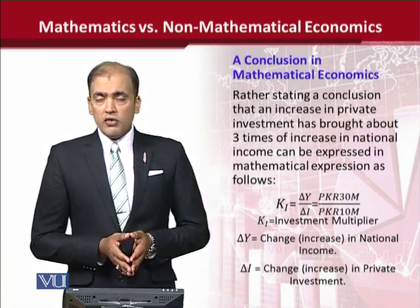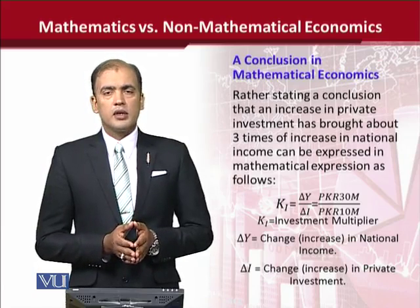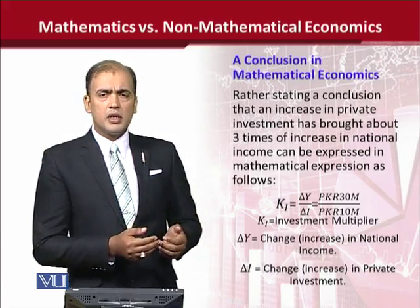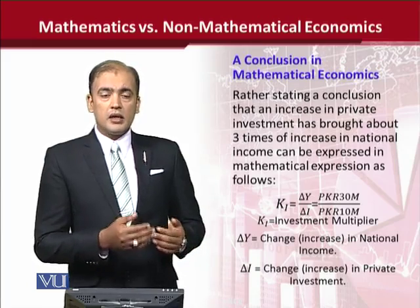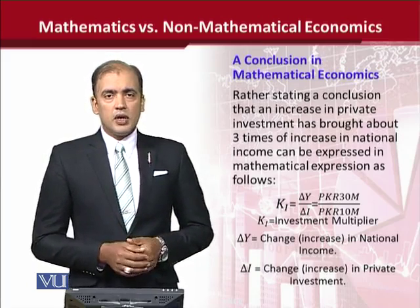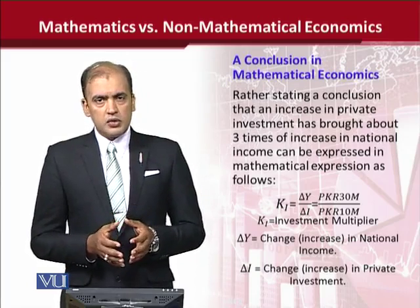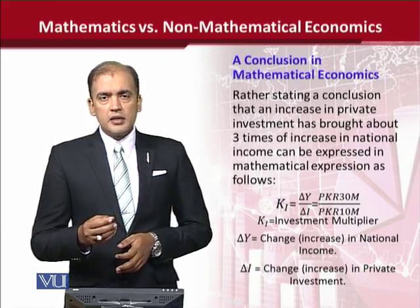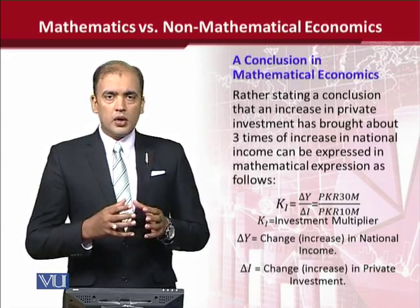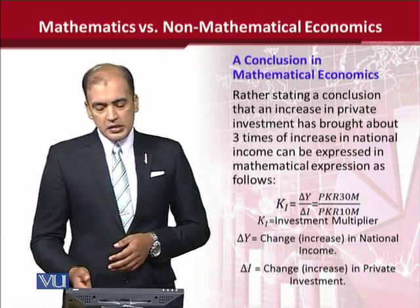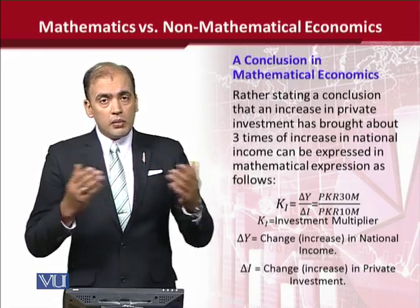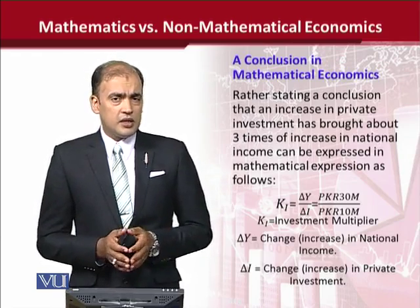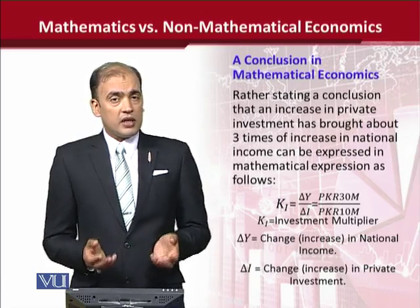We can also write the conclusions of economics in a mathematical way. A very famous concept from macroeconomics is the multiplier. The multiplier shows the effect of an increase in certain variables — for example, private investment — and its impact on national income. KI represents the multiplier and is actually the ratio of the increase in national income to the increase in overall private investment. This value of K can explain the whole macroeconomic phenomenon of the multiplier. You can see how precise, concise, and effective it is.